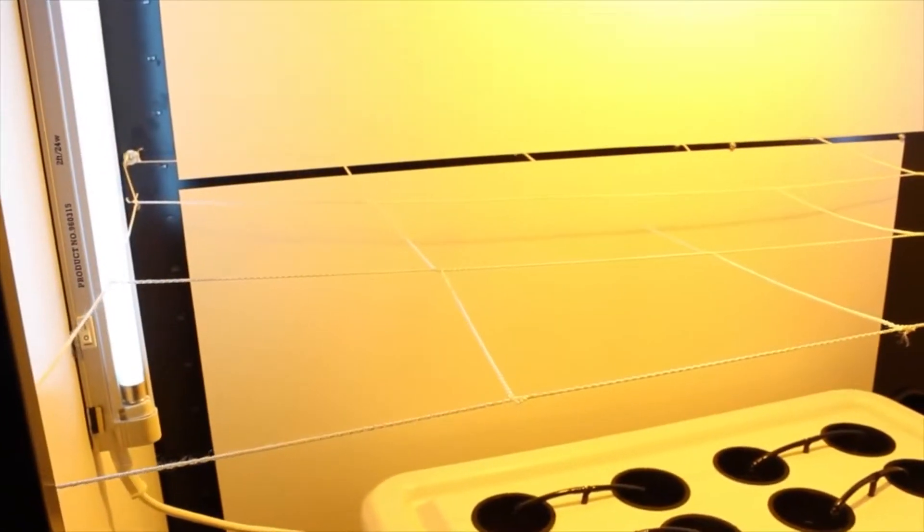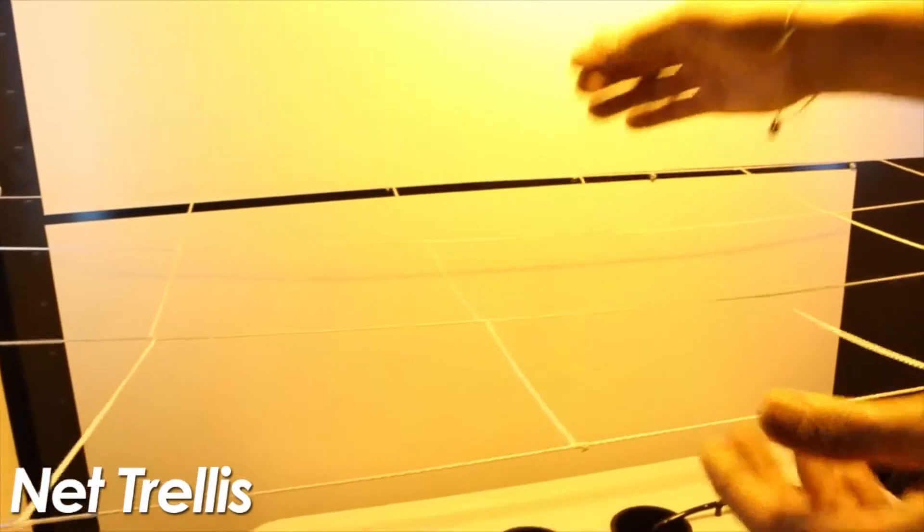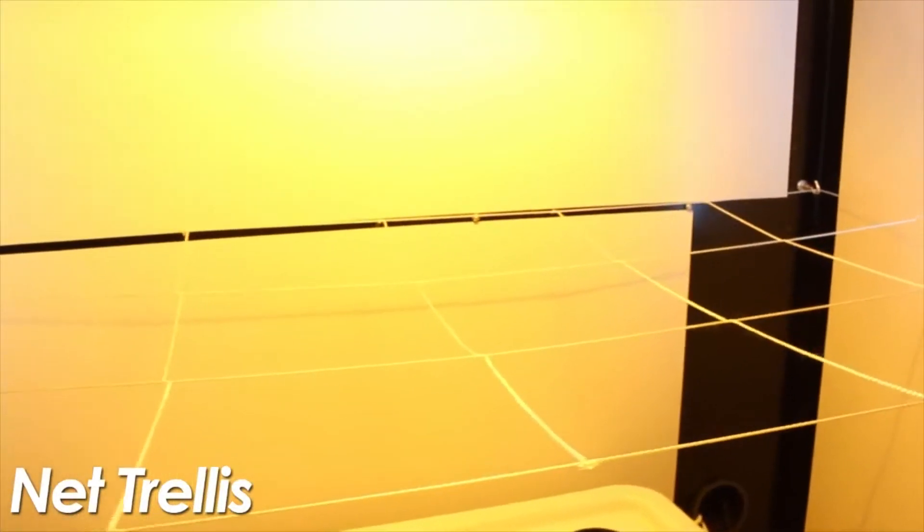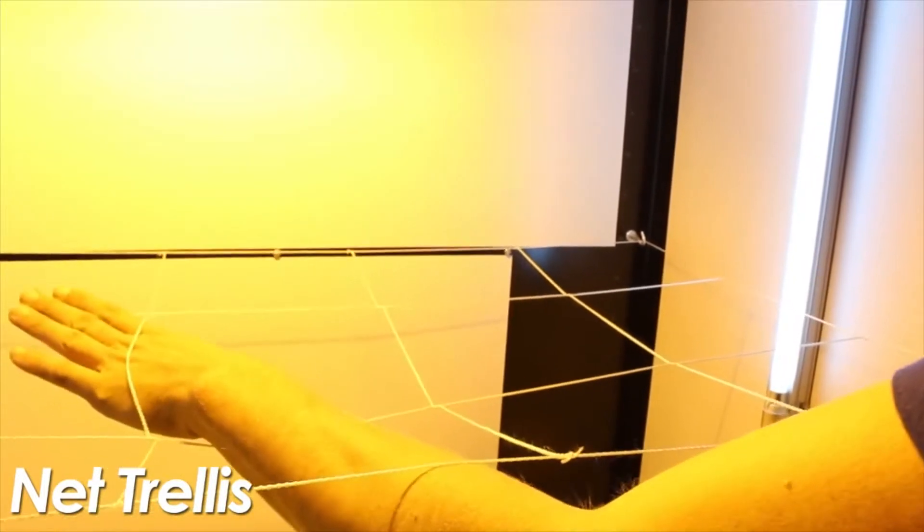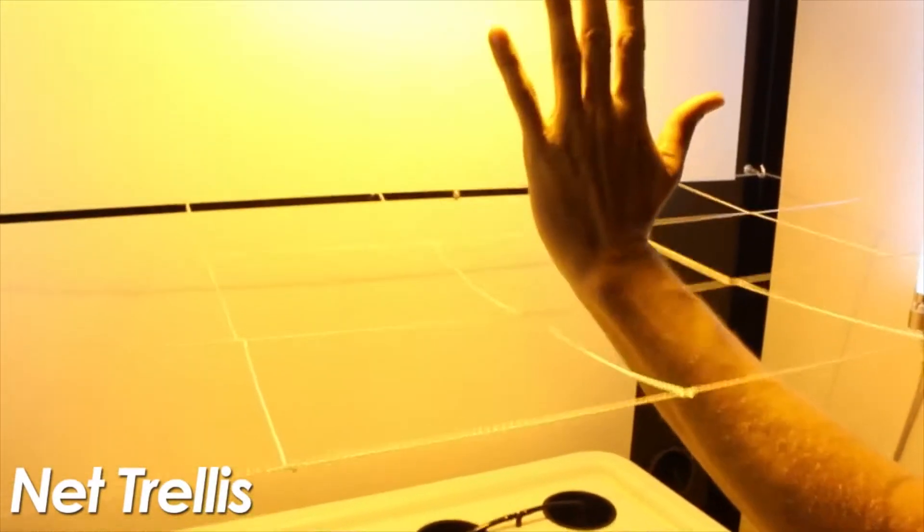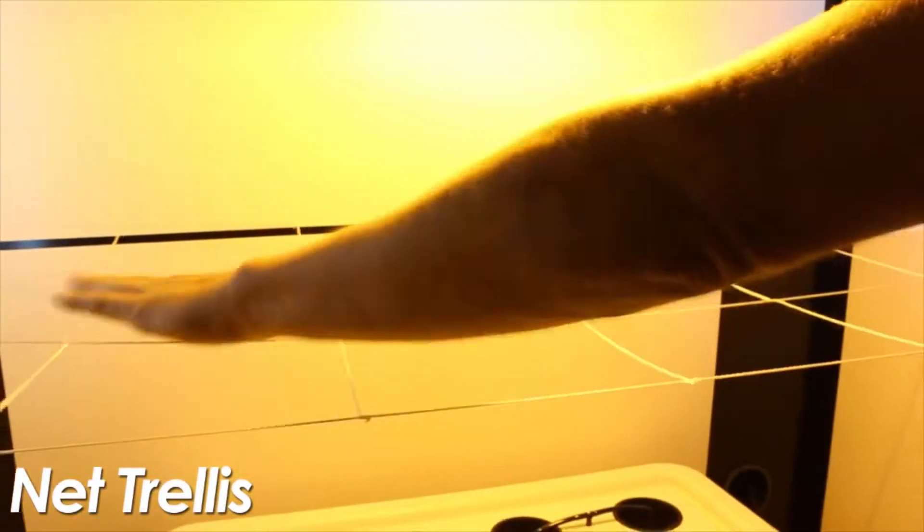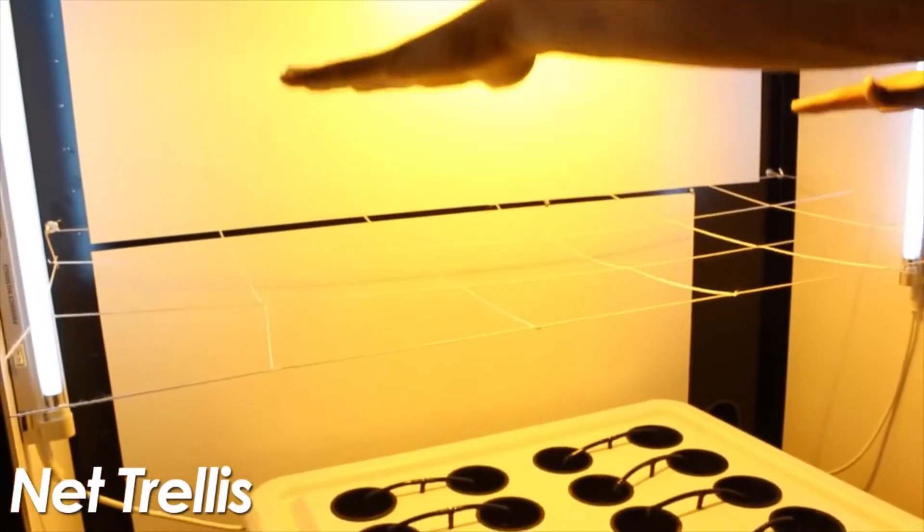Another great feature of the Supernova is the ever-important net trellis, as featured in all Superclosets. This helps plants tie down so you increase your yield, so your entire plant canopy is all at the exact same distance from your light source. This way you get equal distribution of light.